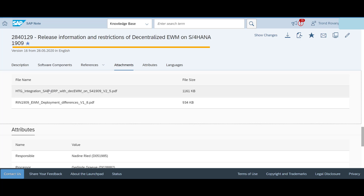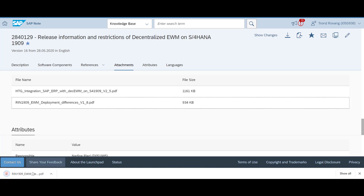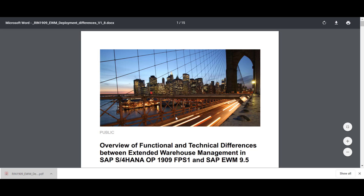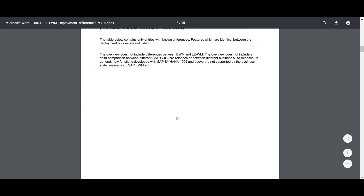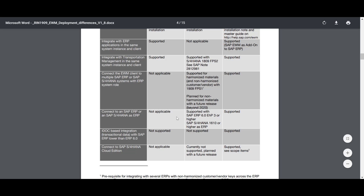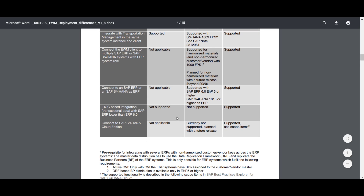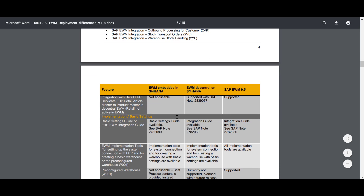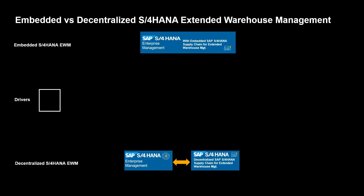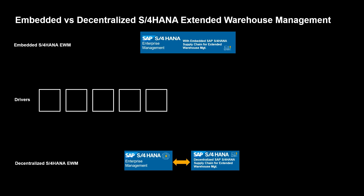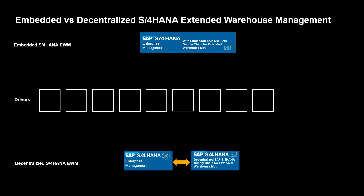Make it a favorite. The note contains among other things an attachment that in detail explains the key differences between the different deployment options of SAP EWM. Please be aware that this document is updated regularly. We will now discuss 11 different drivers that may lead you to conclude on one of the two options: embedded EWM or decentralized EWM.